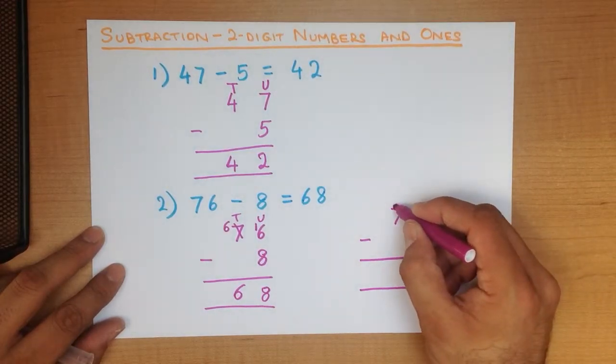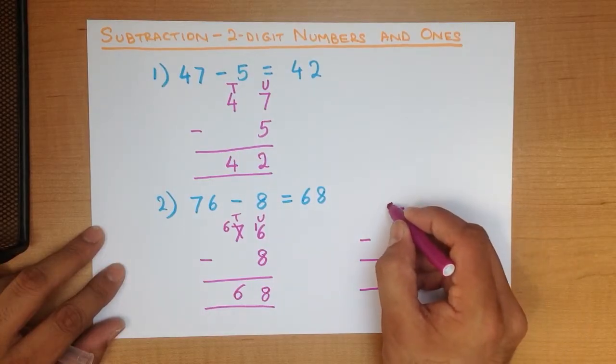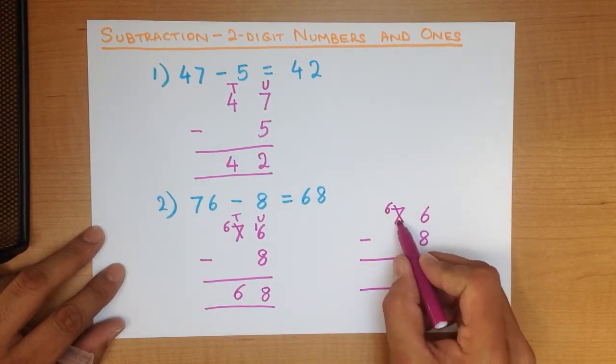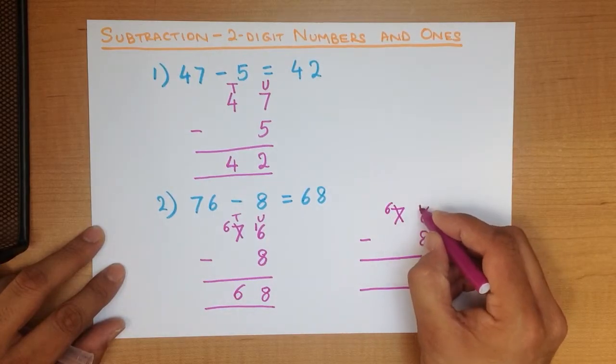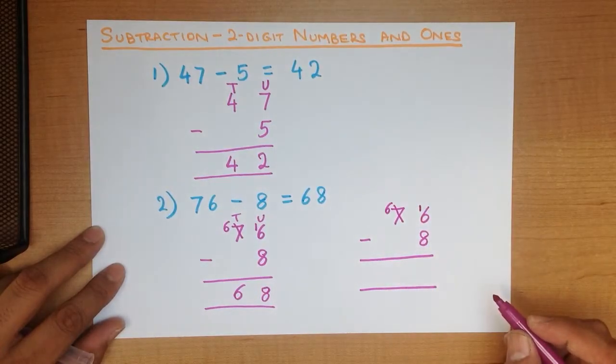So 7, we cross that out. 7 minus 1 is 6. So the 7 has now changed to 6. And that 1 we have taken from here becomes the 1 over here.